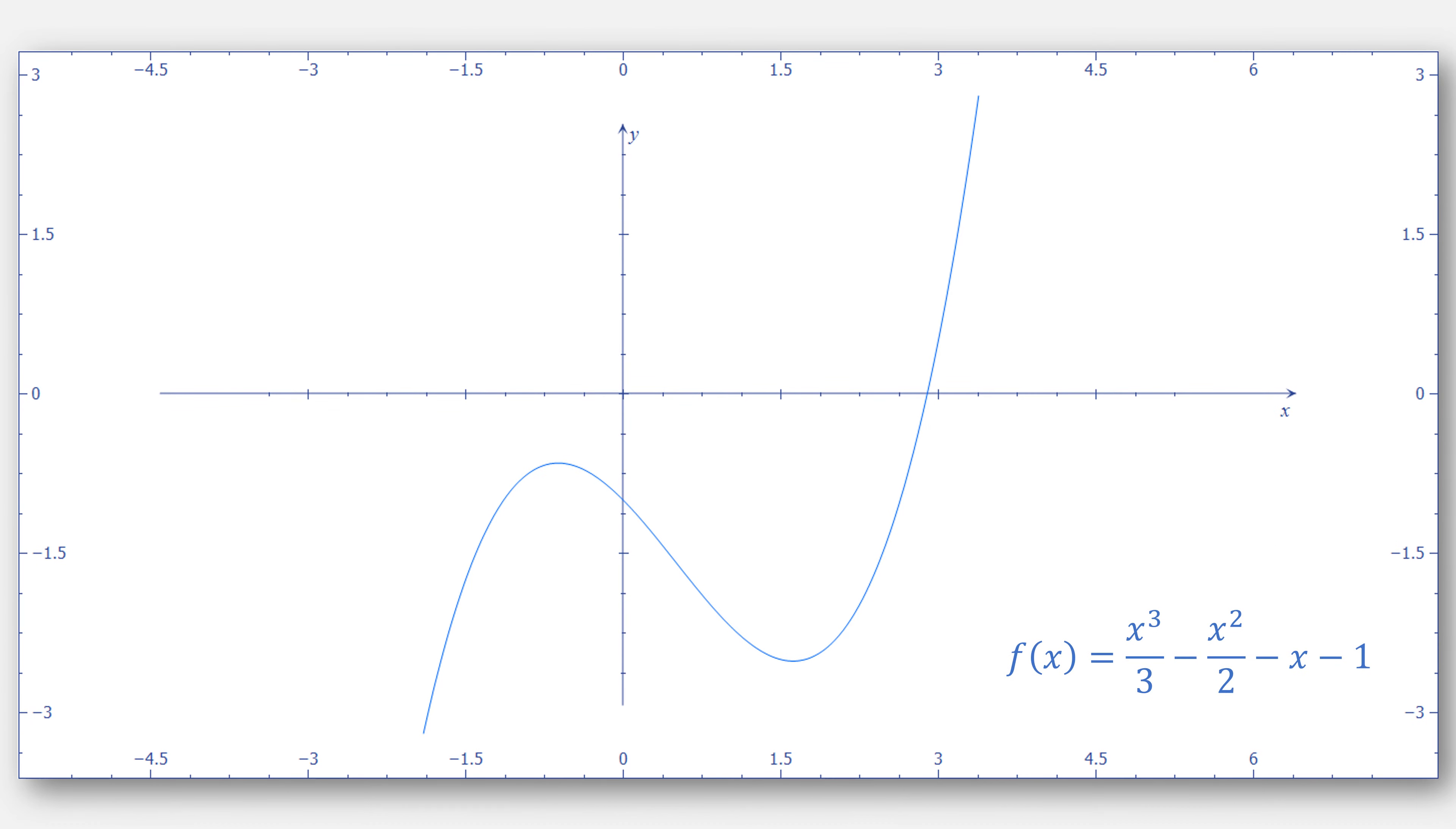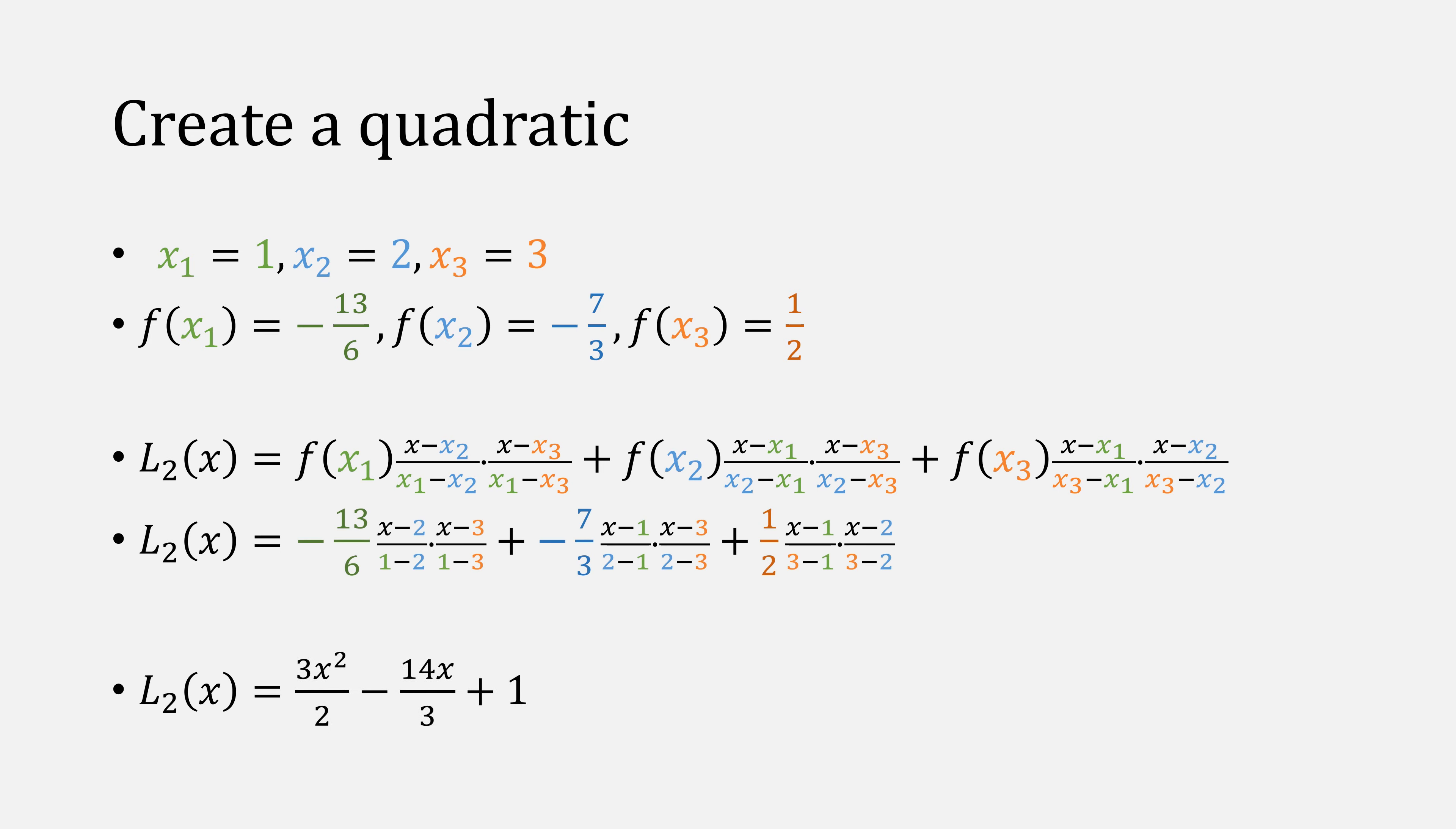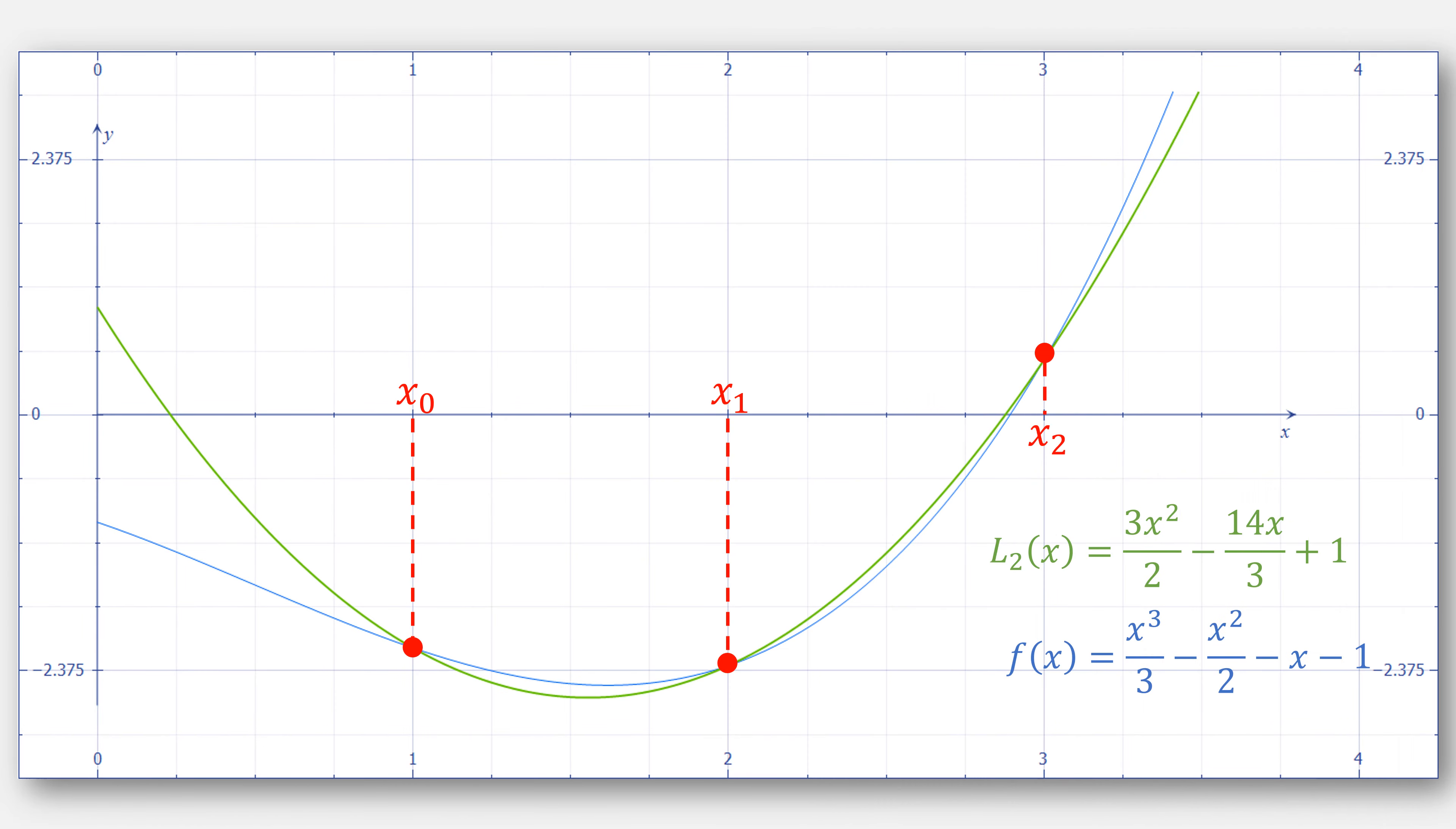Let's try to apply Jarratt's method to find the minimum of the function x cubed over three minus x squared over two minus x minus one. Let's start at the points one, two, and three. Using our three starting points, we evaluate them at our function, then plug everything into our second order Lagrange polynomial to give us this function. Plotting the L2 goes through the same three points. Keep in mind that the order of the points doesn't really matter.